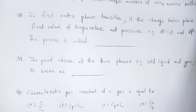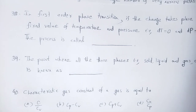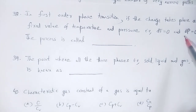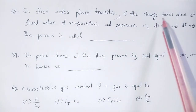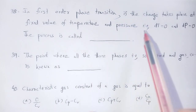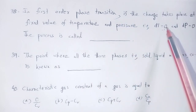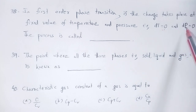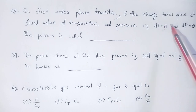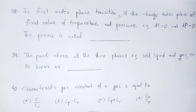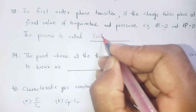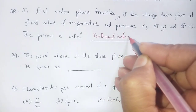Question 38: In first order phase transition, if the change takes place at a fixed value of temperature and pressure, that is delta T equals 0 and delta P equals 0, then: change in temperature to 0 means isothermal process, and change in pressure to 0 means isobaric process. So the process is isothermal and isobaric.